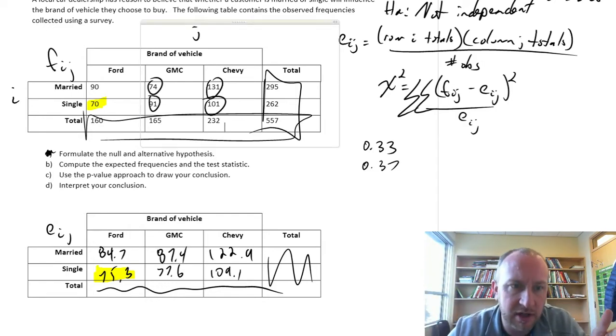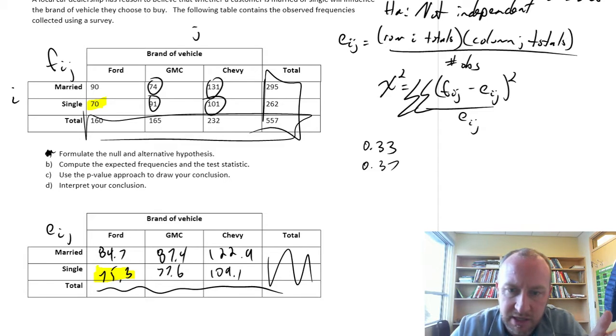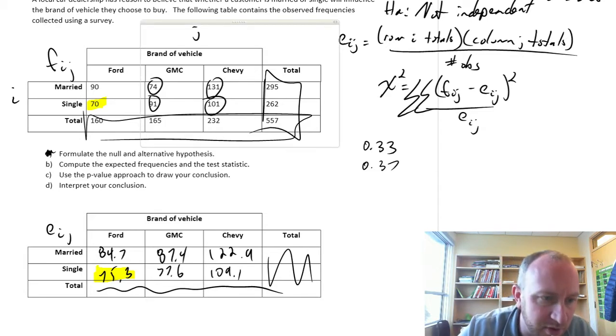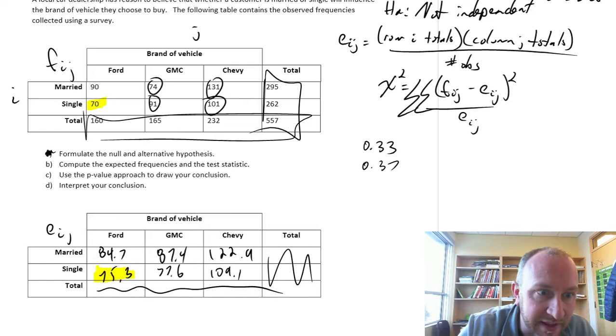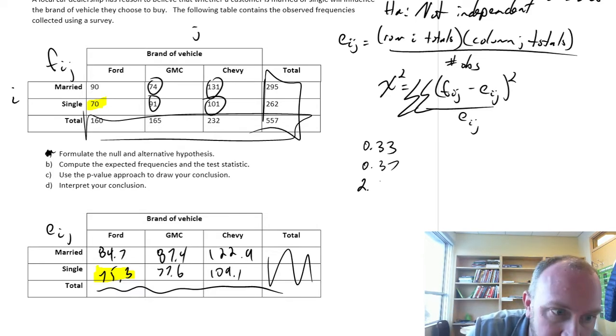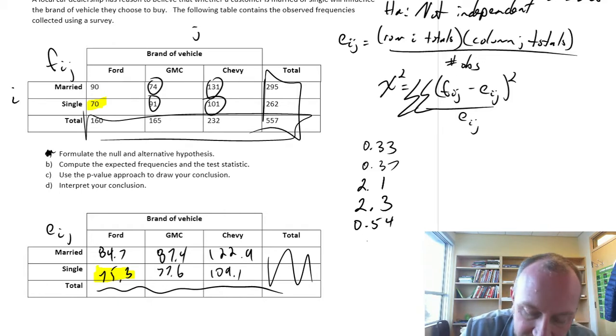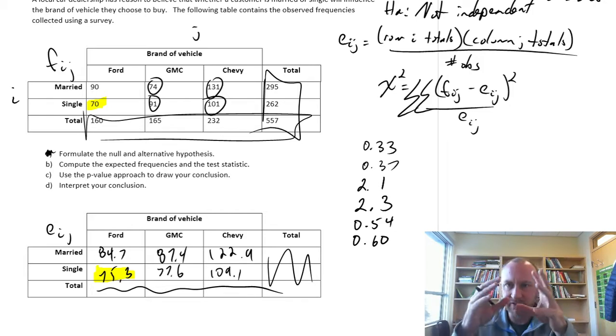So I'm going to cheat, because I've got all of these calculated here in front of me. So we have 0.33, we have 0.37. The next one that we would do would be the married GMC owners, and that would give us a value of 2.1. And then the single GMC would be 2.3. Married Chevy would give us 0.54, and single Chevy owners would be 0.60.